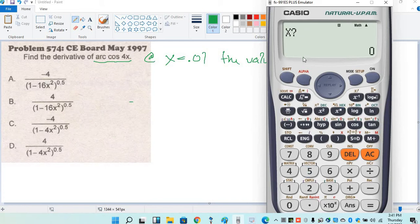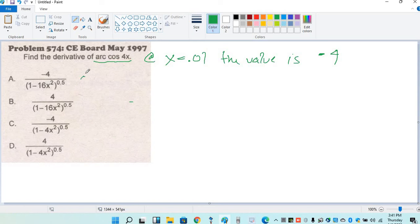Calculate. X is the same value as the first step for the derivative, 0.01. We will use the same value for calculator technique. Equal, negative 4. So at 0.01, the value is negative 4. Therefore, A is the correct answer.